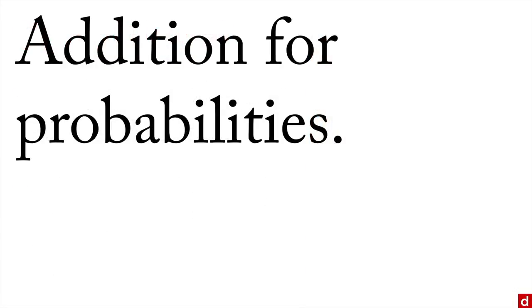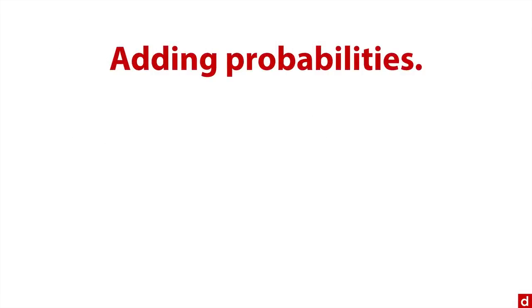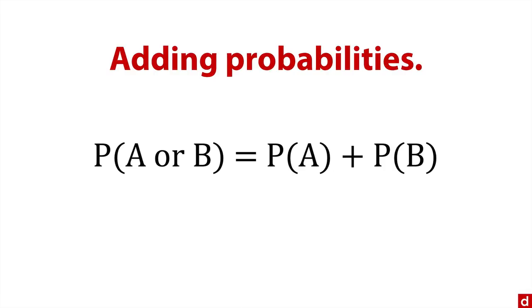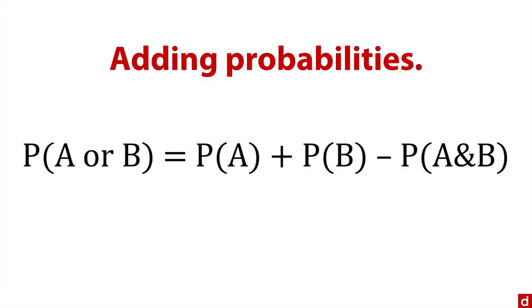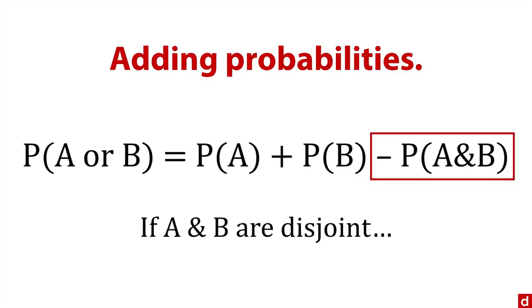I want to say a few things about arithmetic with probabilities, because it doesn't always work the way people think. Let's start with adding probabilities. Say you have two events A and B, and you want to find the probability of either one. You take the probability of event A and add the probability of event B. However, you may have to subtract this little piece,